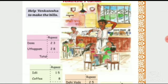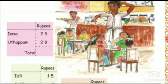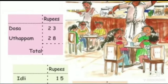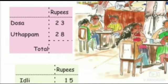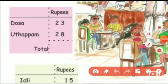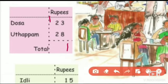Now let's see the next page. Help Venkatesha to make the bills — hum ko Venkatesha ko help karna hai bills banane ke liye. The first bill is dosa and uttapam. Dosa ki price kya hai? 23. Aur uttapam ki price hai? 28. We have to total both the things. 8 plus 3 is 11 — so 1 here and 1 carry over. Next 2 plus 2 is 4 and 4 plus 1 is 5. So the total is 51.